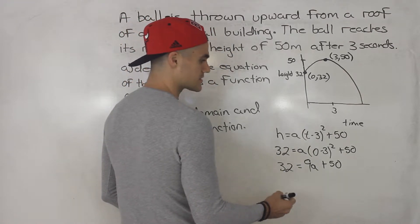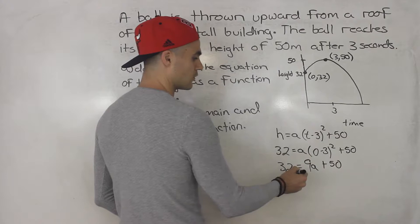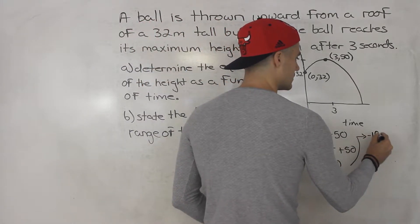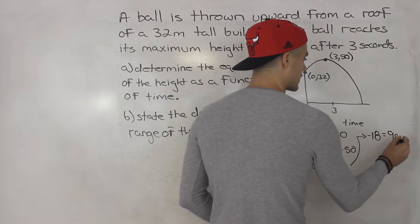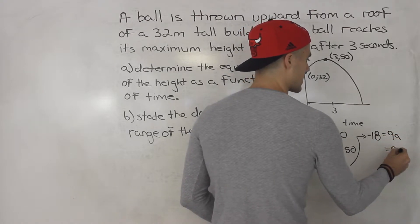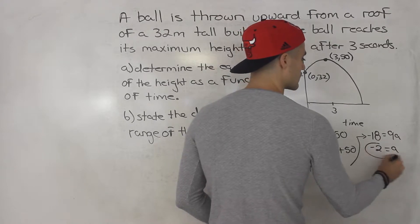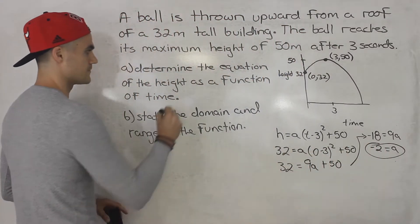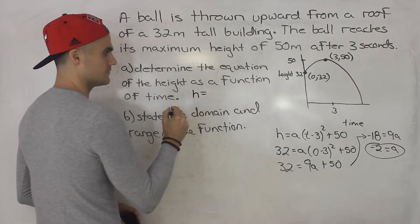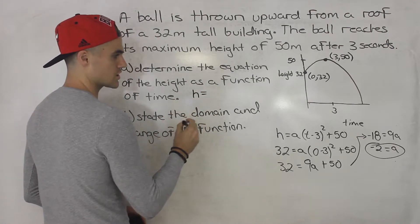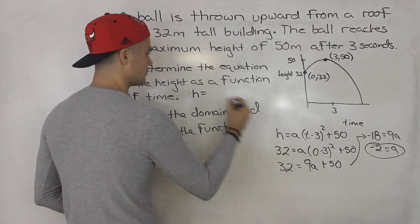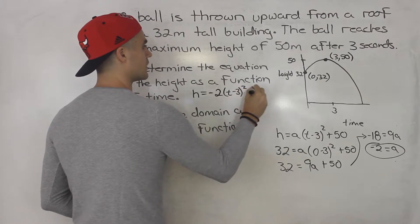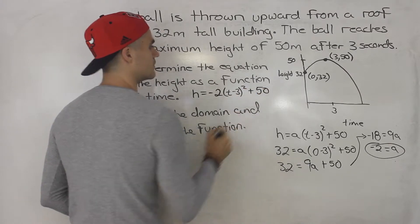So now we just simply solve for a. We could bring the 50 over, 32 minus 50 gives us negative 18, which is equal to 9a. So that means a, if we divide both sides by 9, a is equal to negative 2.